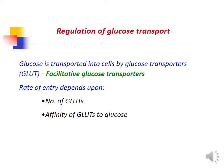Regulation of glucose transport. Glucose is transported into cells by glucose transporters known as facilitative glucose transporters. The rate of entry of glucose depends upon the number of glucose transporters and the affinity of glucose transporters to glucose.